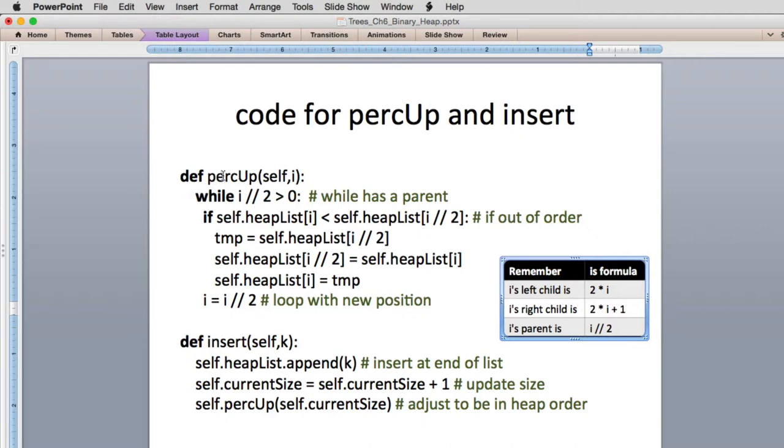So percup is going to be a helper function that's going to move an item up. And you pass it the index number of the current node that's out of order. And while the parent, so we're dividing i by 2 to get the parent, is greater than 0. So while it has a parent, this is a good test for that.